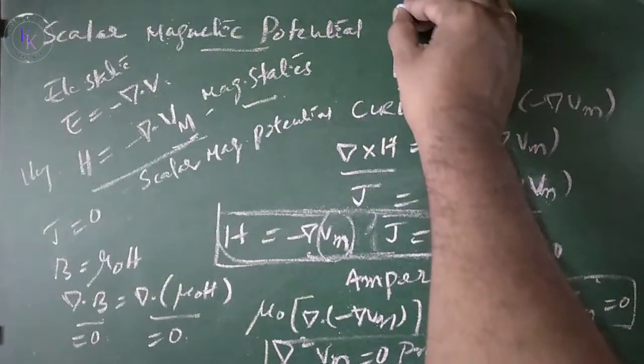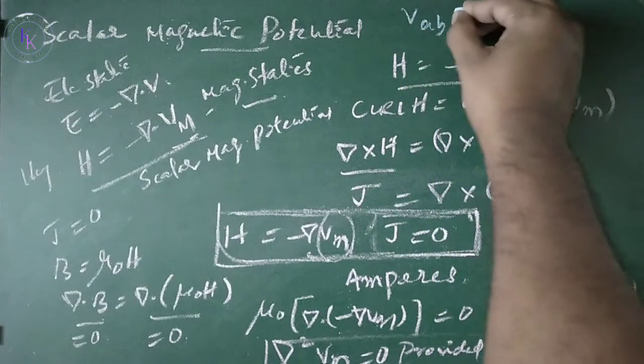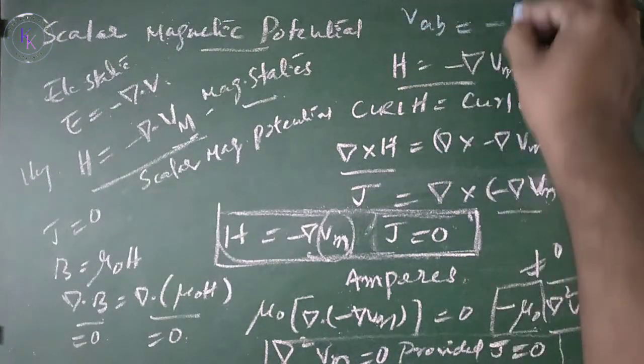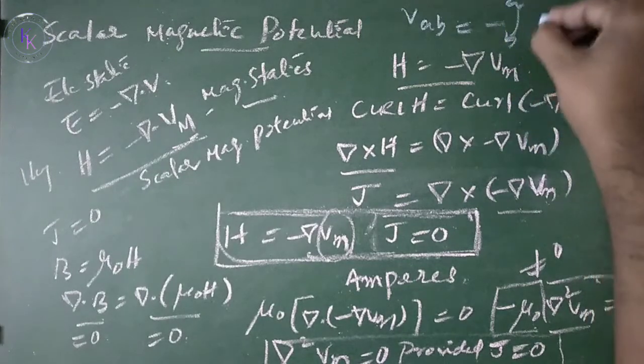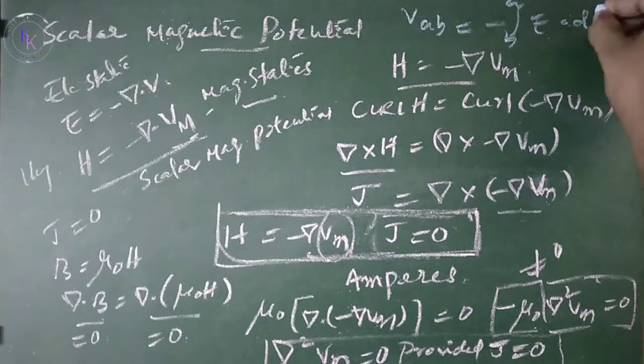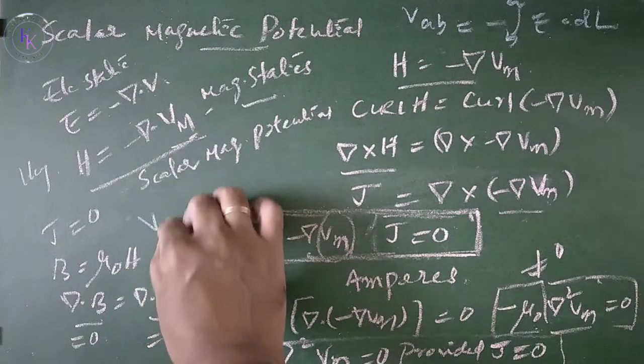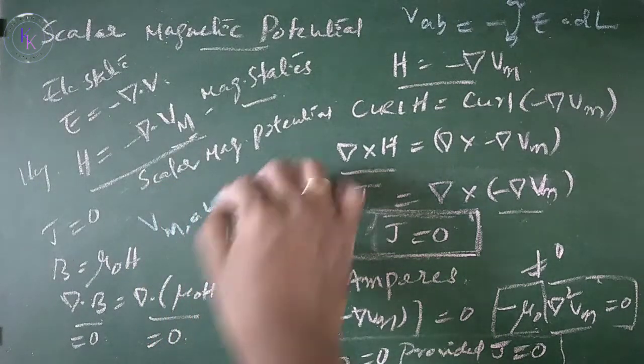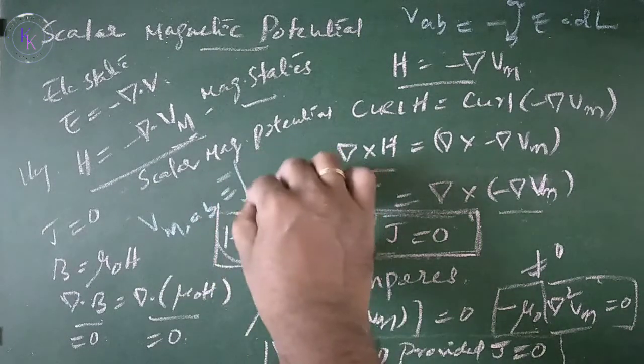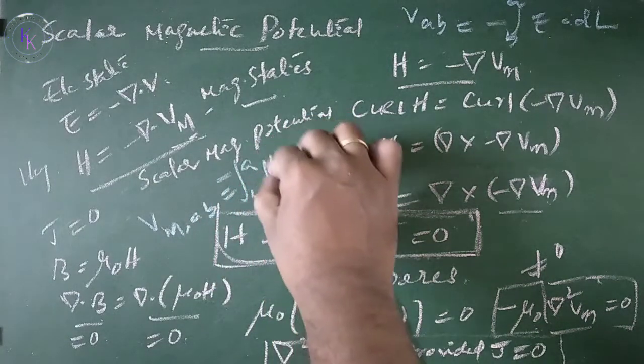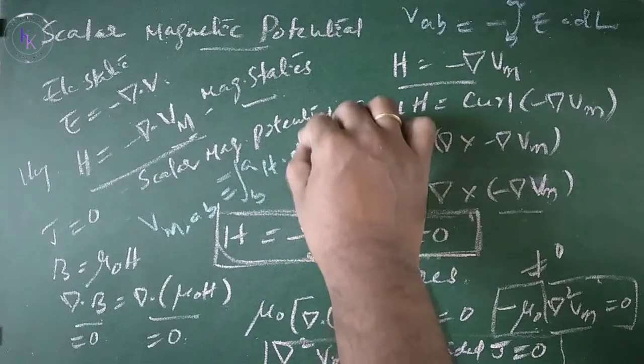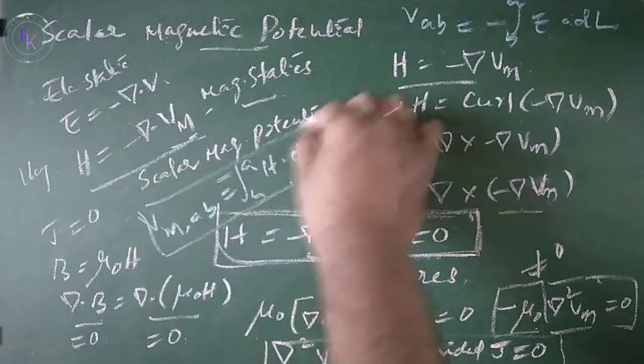Now, we have one more relation in electrostatics that Vab equals minus integral B to A H dot DL. Similarly, we have a relation that Vm equals minus integral B to A H dot DL in magnetostatics.